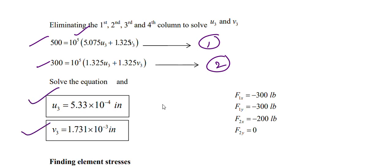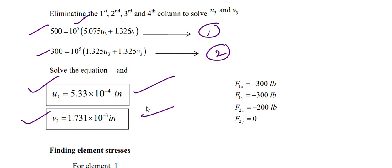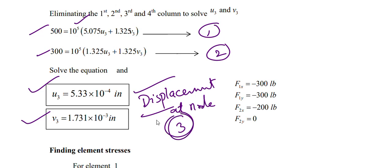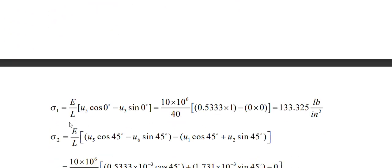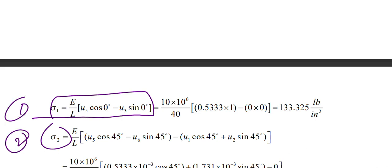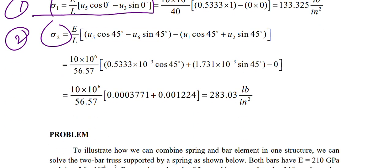From the reduced equations, you obtain the displacement at node 3: u3 and v3. Once displacements are found, stresses in each element can be calculated using the stress formula for element 1 and element 2 separately — substitute and multiply through. Reaction forces at nodes 1 and 2 can also be calculated from the global equation. Thank you for watching — have a good day.